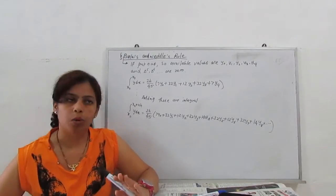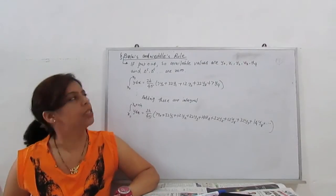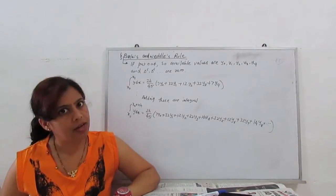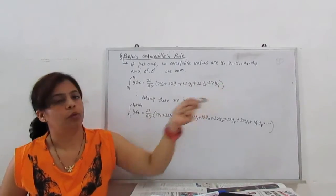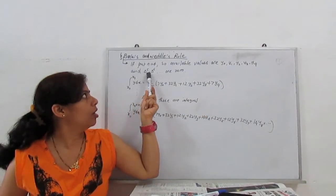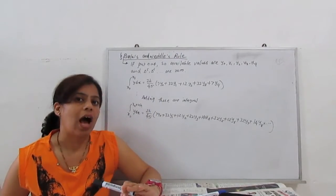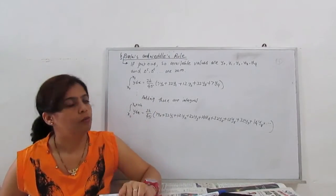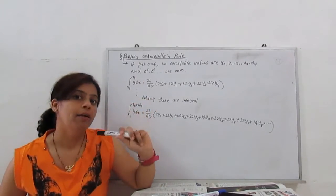Now for Boulez, if we put n equal to four, so available values are y0, y1, y2, y3, y4, and all the del 5, del 6, and further derivatives are zero. So what is our integral? x0 to x4, y dx. This we derive with...